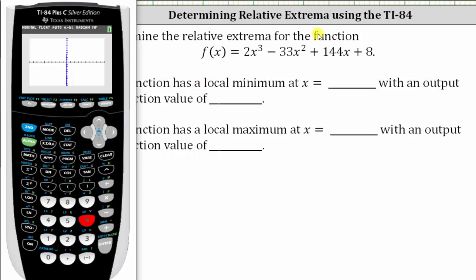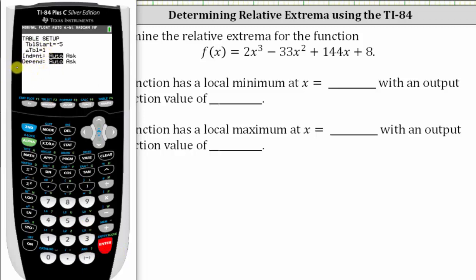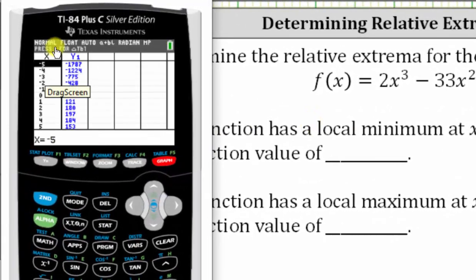To help us know how to adjust the window, let's use the table. Let's first go to table set by pressing second window. Let's have the table start at negative five, enter. And we have the change in the table by ones, which is good. The independent and dependent variables are set on automatic. All this looks good. Let's press second graph for the table. Notice in the x column, as we scroll down, x increases by one. Now let's analyze the y column.